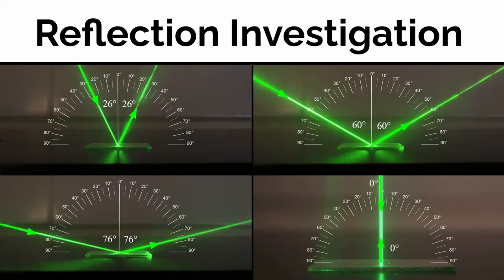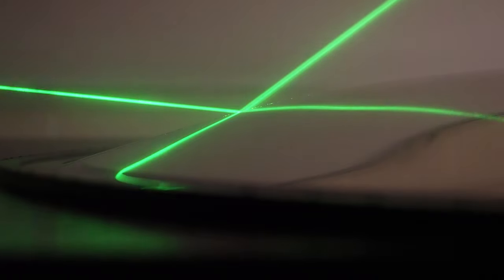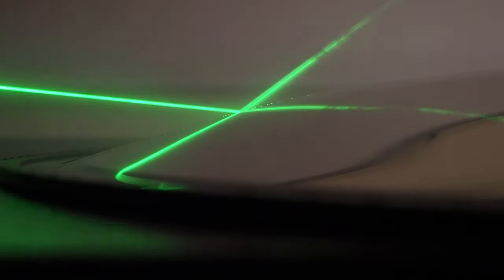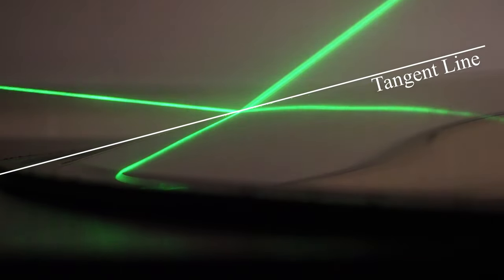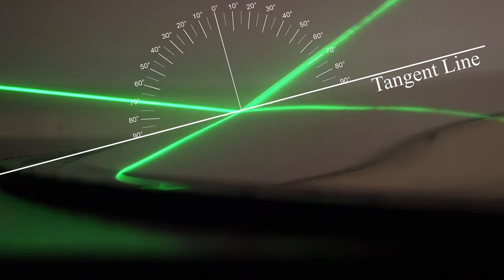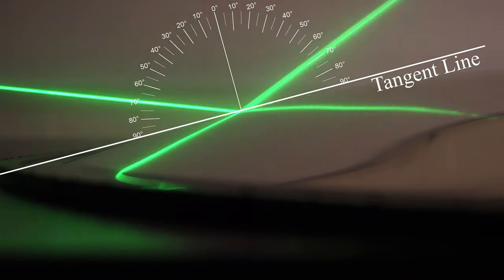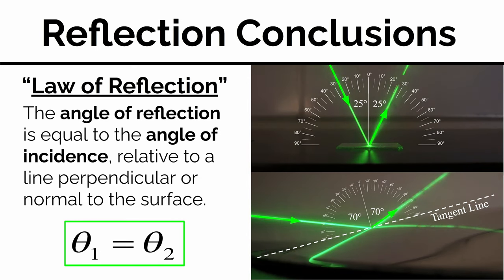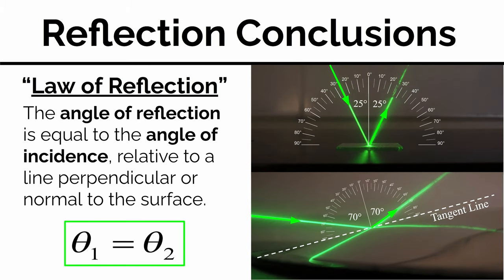But what about curved surfaces? Here's an example of a laser hitting a convex mirror curved surface. We draw a tangent line right where the light hits, then draw a perpendicular line to find how the reflected angle compares to the incident angle. It's coming in at about 70 degrees relative to the perpendicular line, and it bounces off again at 70 degrees. This idea of the reflected angle equaling the incoming angle works for both flat and curved mirrors — this is known as the law of reflection: the angle of reflection equals the angle of incidence, relative to a line perpendicular or normal to the surface, so θ₁ = θ₂.